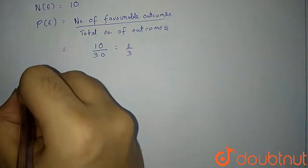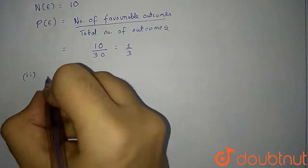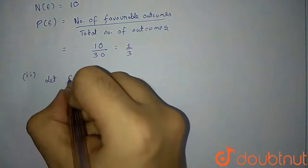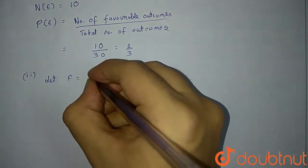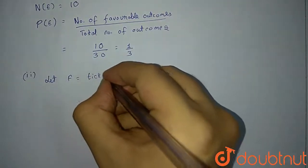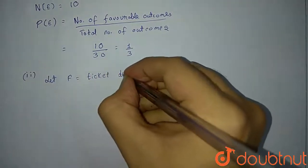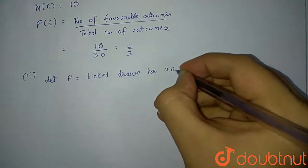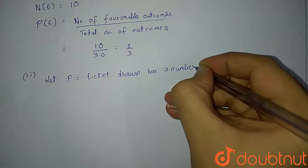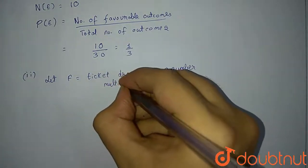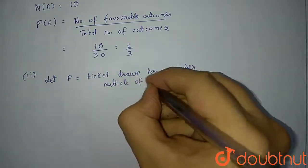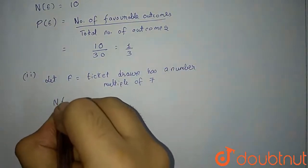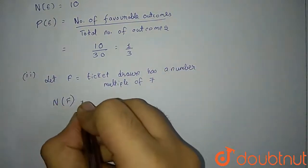Now let us move on to the second event. What was the second event? Let F be the event: ticket drawn has a number which is a multiple of 7.